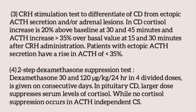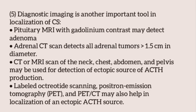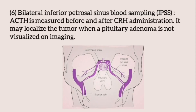The two-step dexamethasone suppression test uses doses of 30 and 120 mcg/kg/day in four divided doses on consecutive days. In pituitary Cushing disease, the large dose suppresses serum cortisol, while no suppression occurs in ACTH-independent Cushing syndrome. Diagnostic imaging is important for localization: pituitary MRI with gadolinium contrast may detect an adenoma; adrenal CT can detect all adrenal tumors more than 1.5 cm in diameter; CT or MRA of the neck, chest, abdomen, and pelvis can detect ectopic ACTH sources. Octreotide scanning, PET scan, or PET-CT may also be used for ectopic ACTH localization. Bilateral inferior petrosal sinus sampling measures ACTH before and after CRH administration and can localize a pituitary tumor not visible on imaging.